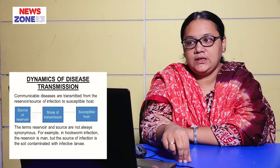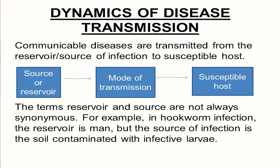Communicable diseases are transmitted from the reservoir or source of infection to susceptible host. This is the Dynamics of Disease Transmission — from source to susceptible host there are several types of mode of transmission. The terms reservoir and source are not always synonymous. For example, in hookworm infection, the reservoir is man, but the source of infection is the soil contaminated with infective larva.